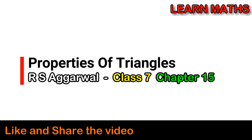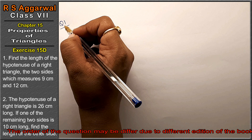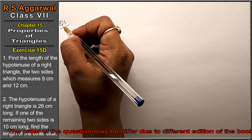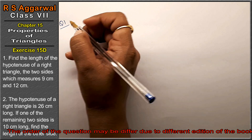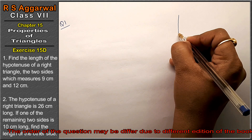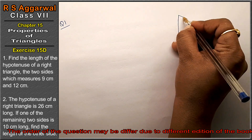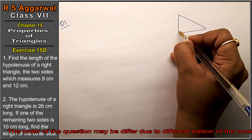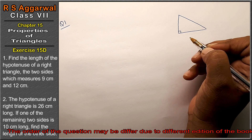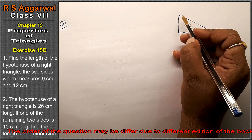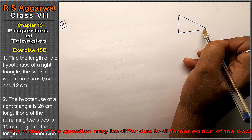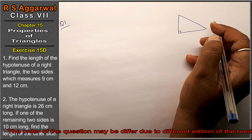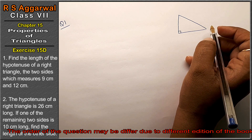Let's do question number one of exercise 15D, that is the properties of triangle. Question number one is: find the length of the hypotenuse of a right triangle. This is a right triangle, which means a 90-degree angle. The other two sides measure 9 cm and 12 cm.